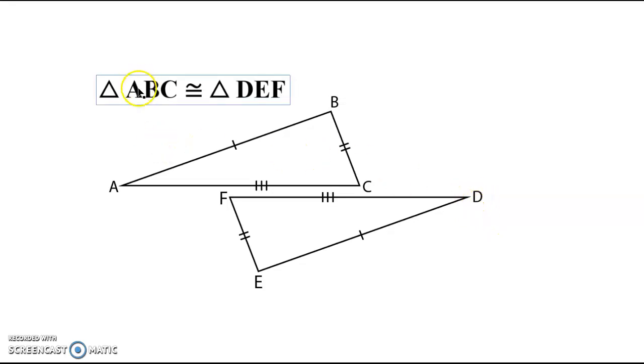So we want A to be our first letter, D would then have to be our first letter of the second triangle. We also have angle B congruent to angle E, so B is the second letter, E is the second letter. And then C is congruent to F, angle C to angle F, so C would be the last letter, F is the last letter.